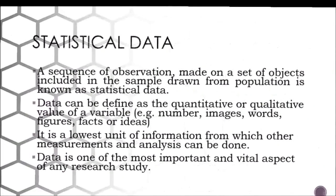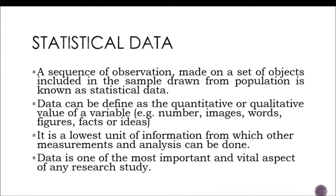So we have statistical data. In the previous slides we learned that statistics is the science and art of dealing with figures and data, and those figures and data can be put into the term 'statistical data.' Statistical data is a sequence of observations made on a set of objects included in a sample drawn from a population. It can also be defined as a quantitative or qualitative value of a variable, meaning it could be numbers, images, words, figures, facts, or ideas. It is the lowest unit of information from which other measurements and analysis can be done, and data is one of the most important and vital aspects of any research study.